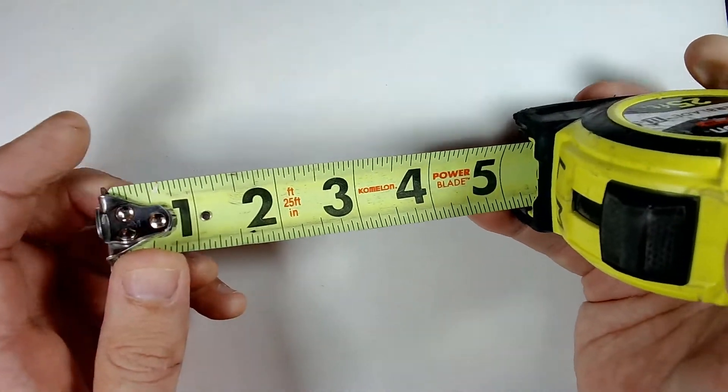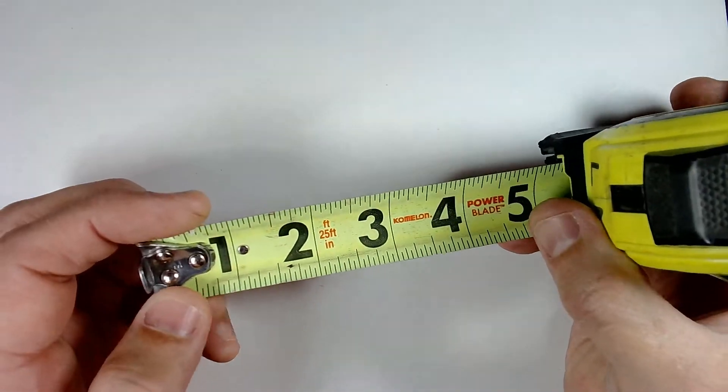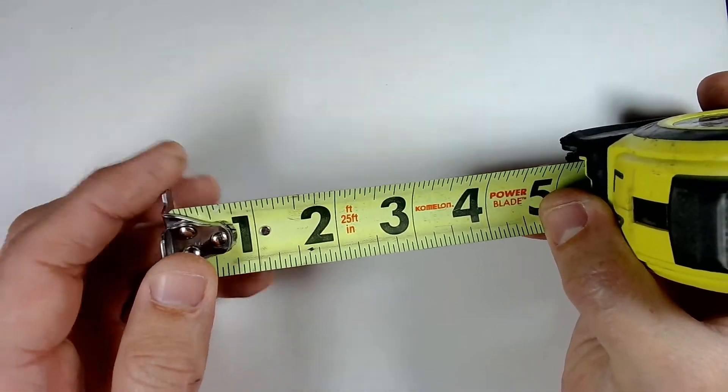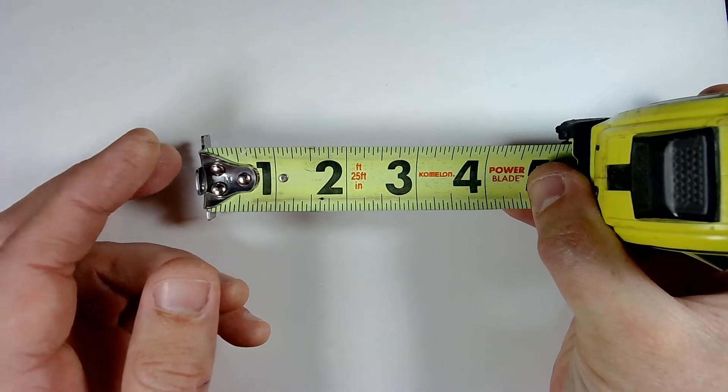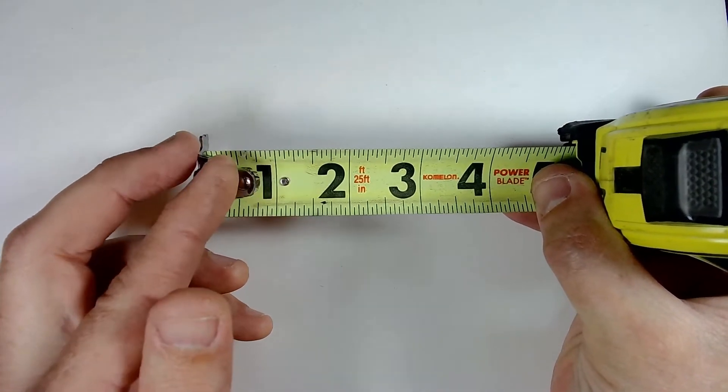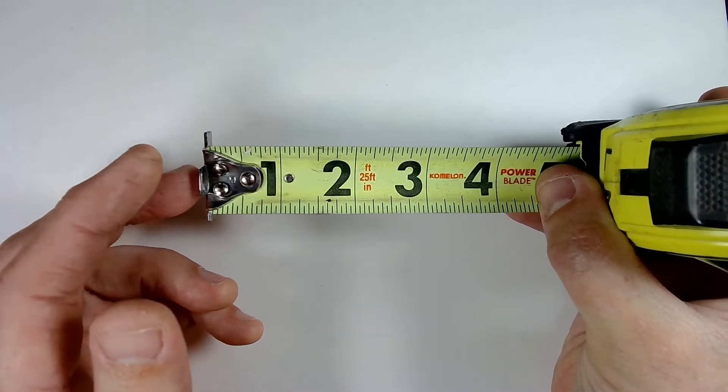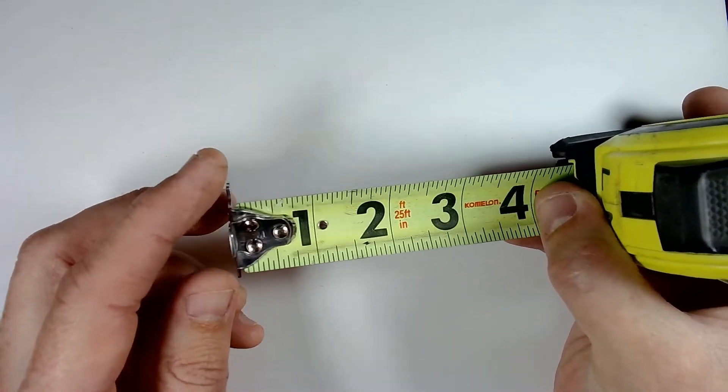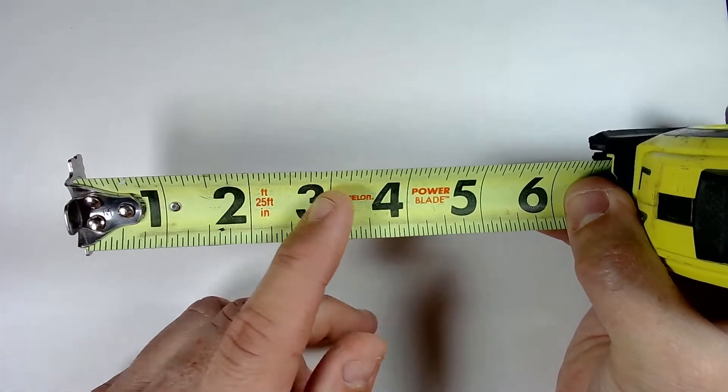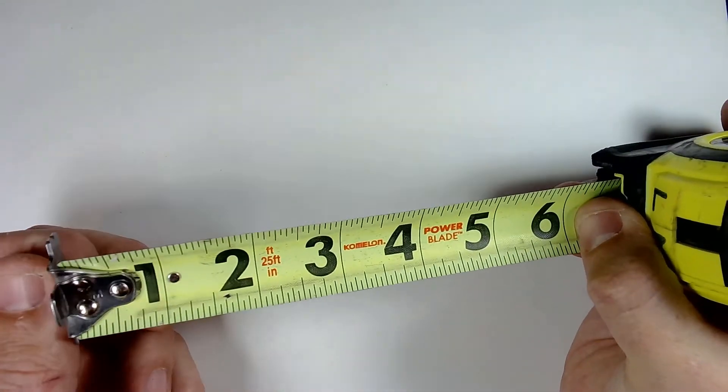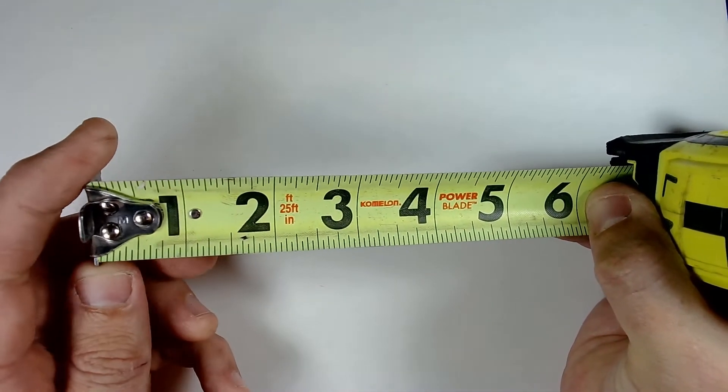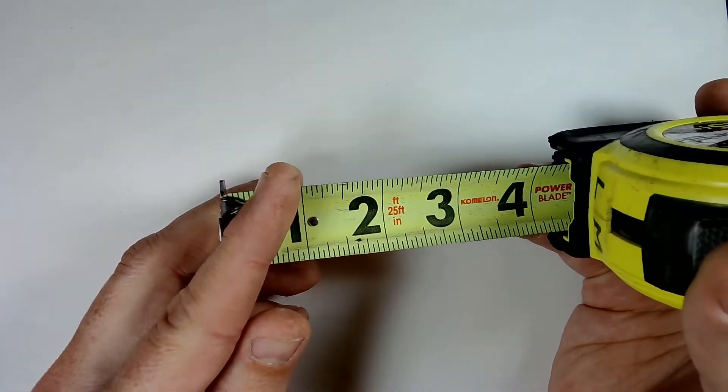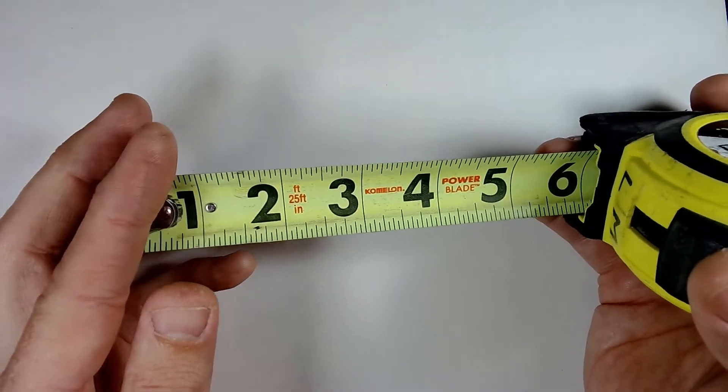Now it's important that whatever you measure, whatever tape measure you use to measure a dimension, that you use the same tape measure to also cut that material with as well. Because just because the scale is the same doesn't necessarily mean that our tips all are. So if you go back and forth between tape measures, it might not work out so well for you.